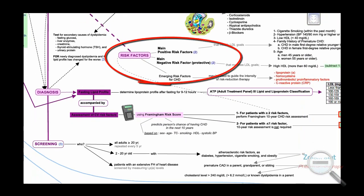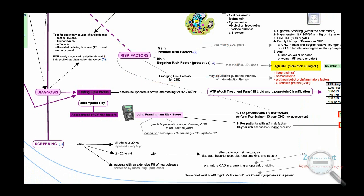Dyslipidemia risk factors are classified as positive risk factors, negative risk factors, and emerging risk factors. The negative risk factor is high HDL, and its presence enables subtracting one from the count of positive risk factors.